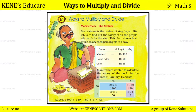Mani Ratnam wanted to calculate the salary of the cook for the month of January. He wrote: 60 multiplied by 30 gives 1800, and 5 multiplied by 30 gives 150. So he split 65 into 60 plus 5 to make the calculation easier, and calculated how much the cook earns for the month of January.